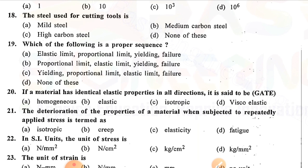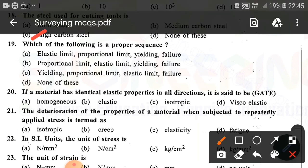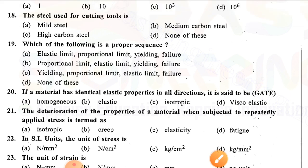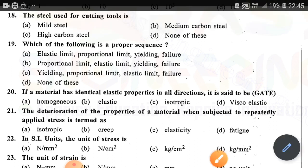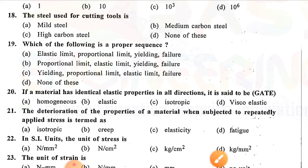Question number eighteen: The steel used for cutting tools is — option C is correct — high carbon steel. Question number nineteen: Which of the following is the proper sequence? — option B is correct — proportionality limit, elastic limit, yielding, and failure. Question number twenty: If a material has identical elastic properties in all directions, it is said to be — option C is correct — isotropic.